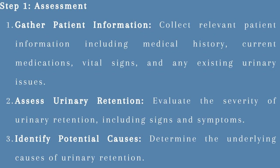Step 1: Assessment. Gather patient information — collect relevant patient information including medical history, current medications, vital signs, and any existing urinary issues. Assess urinary retention by evaluating the severity, including signs and symptoms such as decreased urine output, distended bladder, discomfort, and pain. Identify potential causes such as obstruction, neurological issues, medications, or post-operative effects.